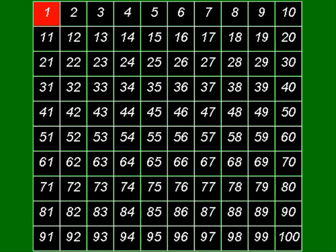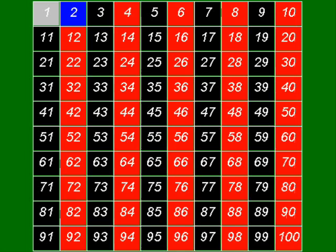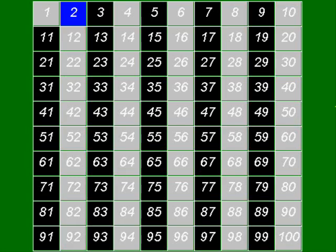First of all, 1 is not a prime number, so get rid of it. 2 is, because it's divisible by itself and 1 only. But all the other multiples of 2, in other words all the other even numbers, can't be prime, so let's get rid of those as well.